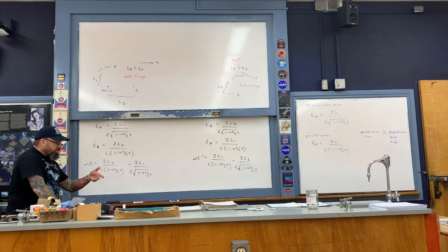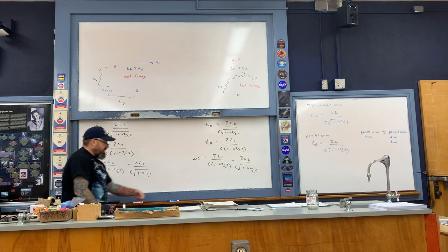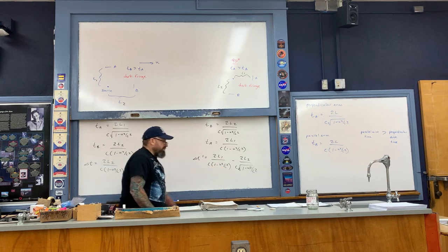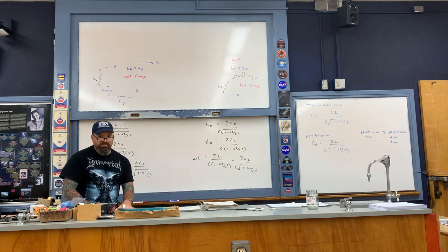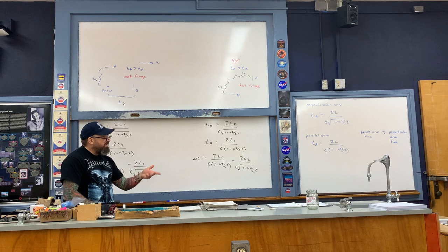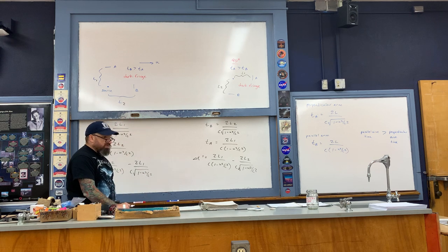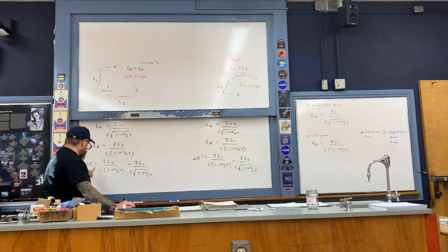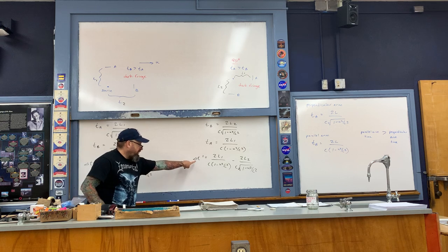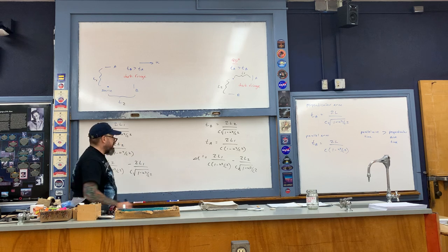The difference between these two values of delta t and delta t prime corresponds to the amount of shift that occurs in the interference pattern.